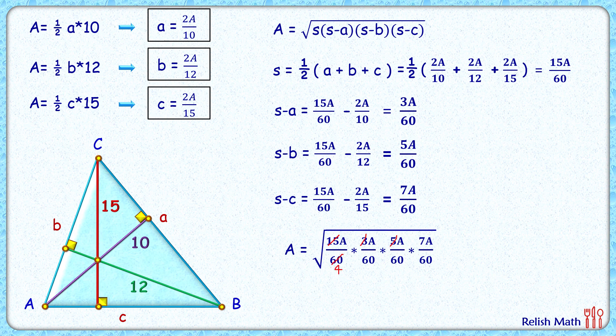Simplifying further, we'll get area of this triangle as square root of 7A² divided by 240. Both the A will cancel since area squared equals area of triangle itself.